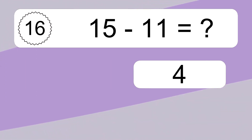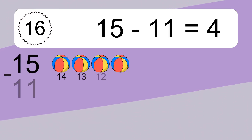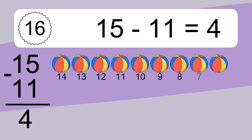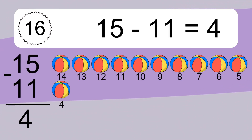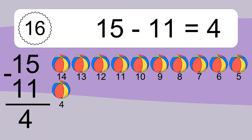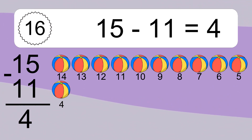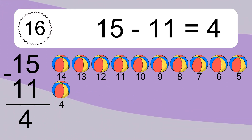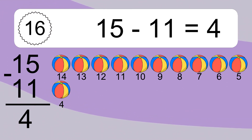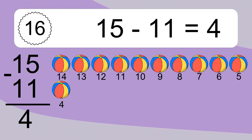15 minus 11 equals 4. Let's count it. 14, 13, 12, 11, 10, 9, 8, 7, 6, 5, 4.